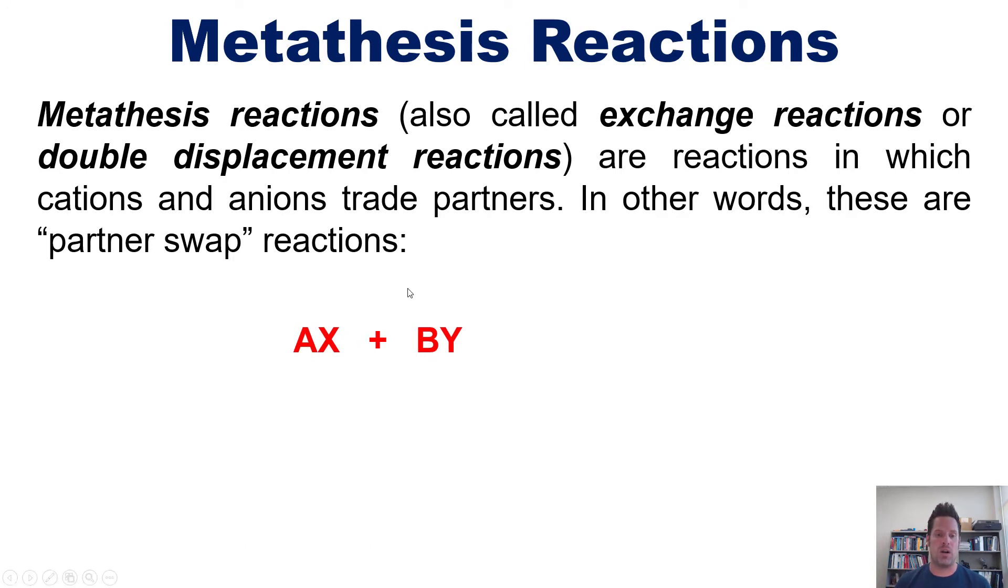In a metathesis reaction, the cations basically swap partners. So A that is originally partnered with X swaps partners and joins up with Y, whereas B that was originally partnered with Y swaps partners and goes up with X. That ends up yielding these products: AY plus BX.